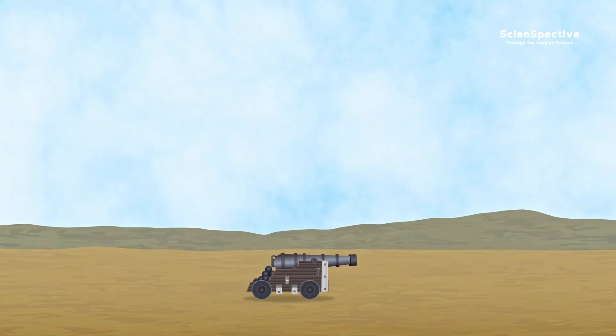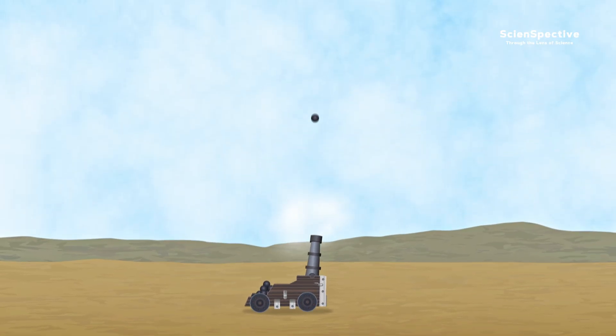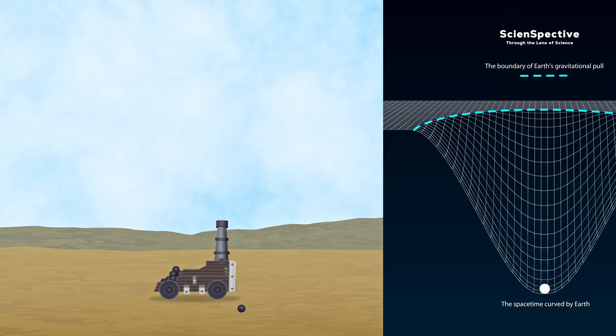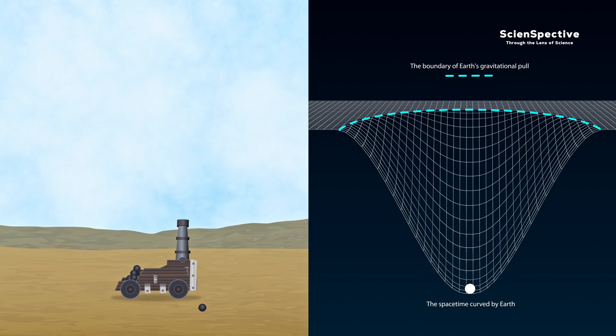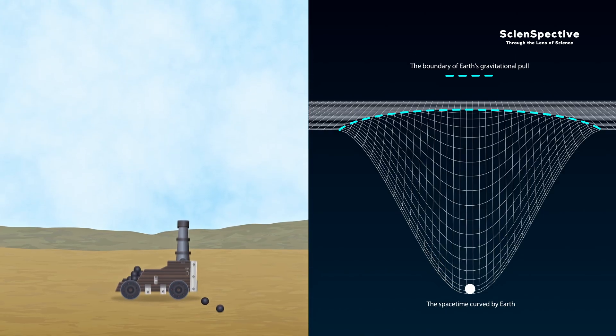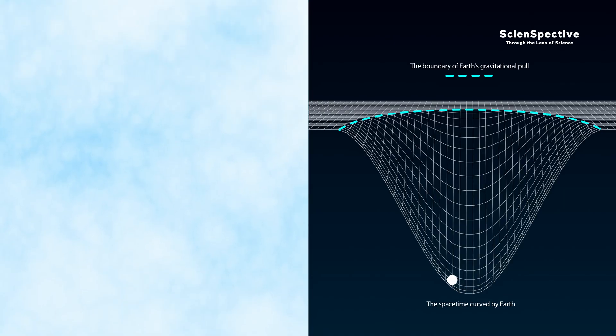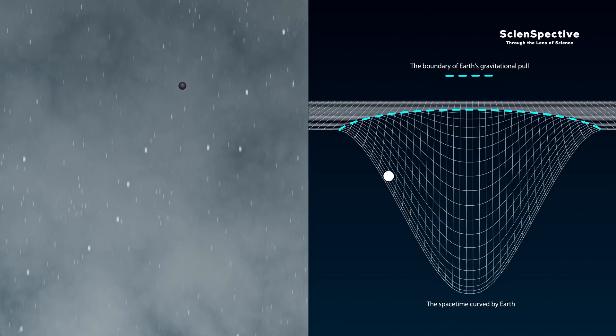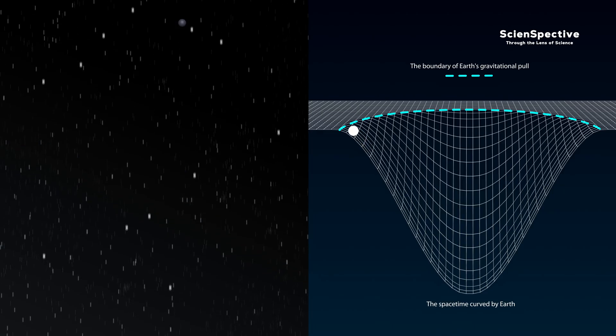If we shoot a cannonball vertically upward on Earth, its ascent slows due to gravity, eventually stopping, and then accelerating back toward Earth. This can be imagined as trying to roll a ball up a steep hill. If the ball isn't pushed hard enough, it won't reach the top and will roll back down. But if it's pushed with sufficient force, it will climb the slope. In other words, if the cannonball's initial upward speed exceeds a critical value called escape velocity, it will leave Earth's gravitational pull.